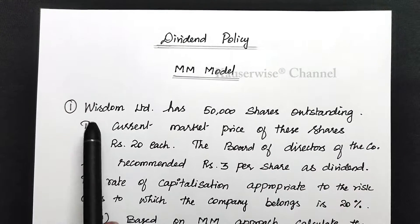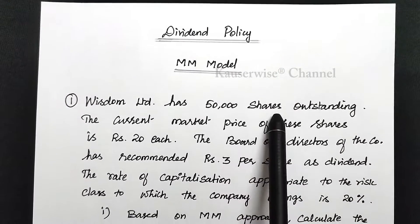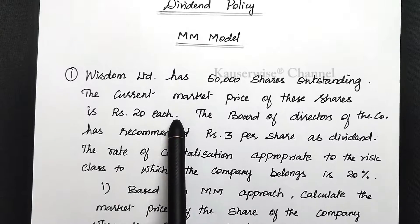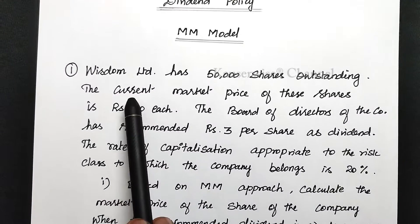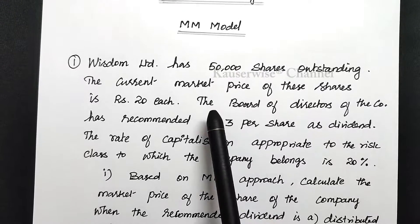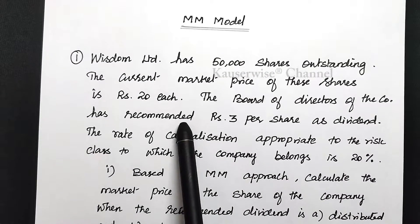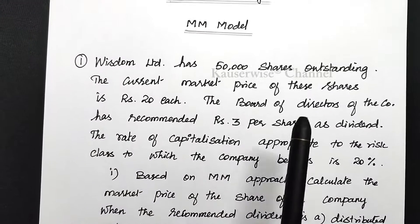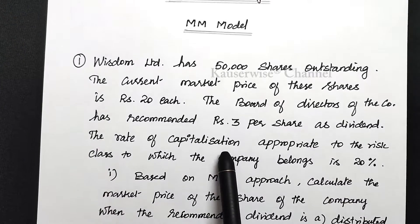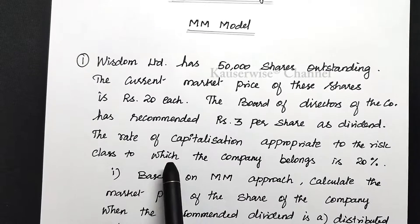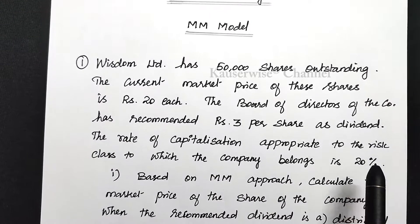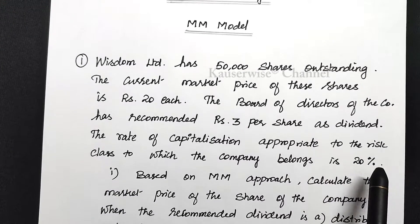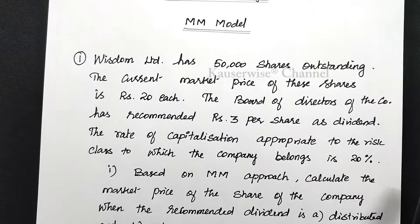Wisdom Limited has 50,000 shares outstanding. The current market price of these shares is rupees 20 each — this is P0, the current market price. The board of directors has recommended rupees 3 per share as dividend — this is D1. The rate of capitalization appropriate to the risk class of the company is 20 percent — this is the cost of equity KE.